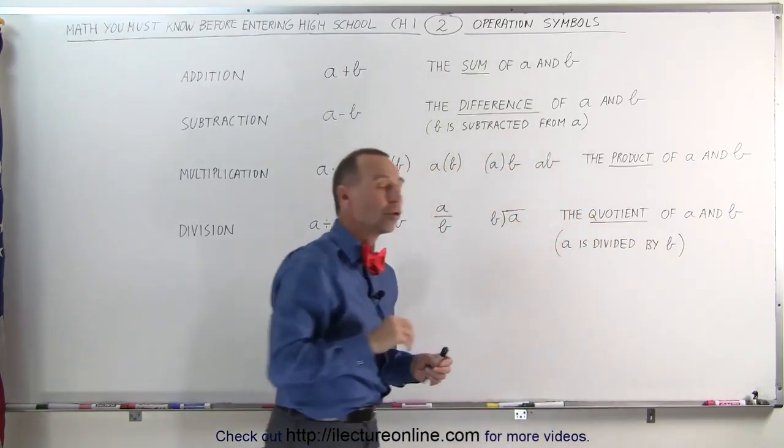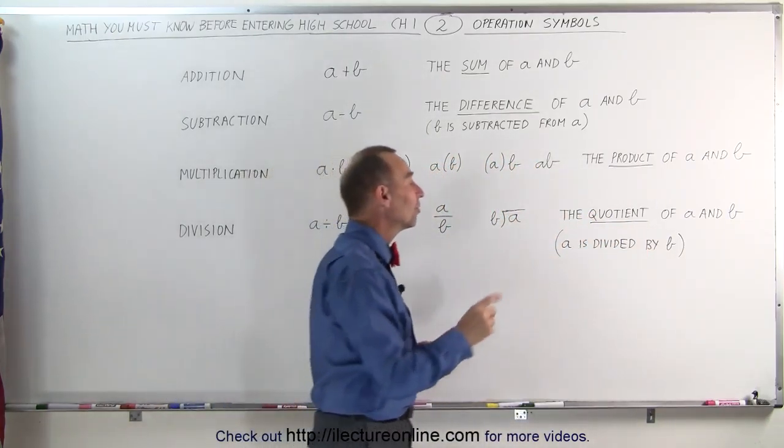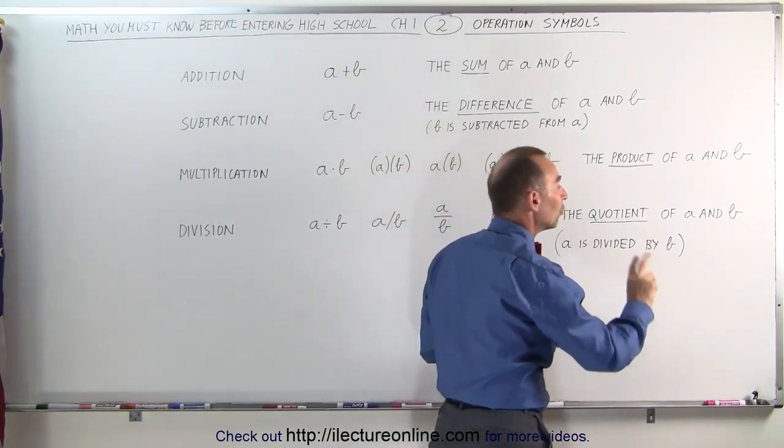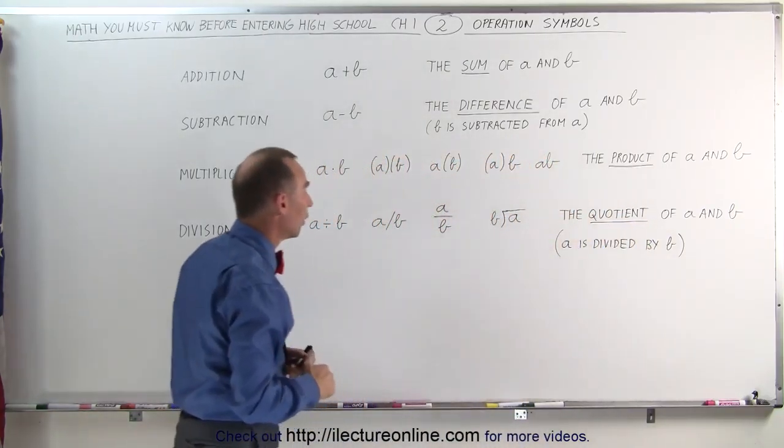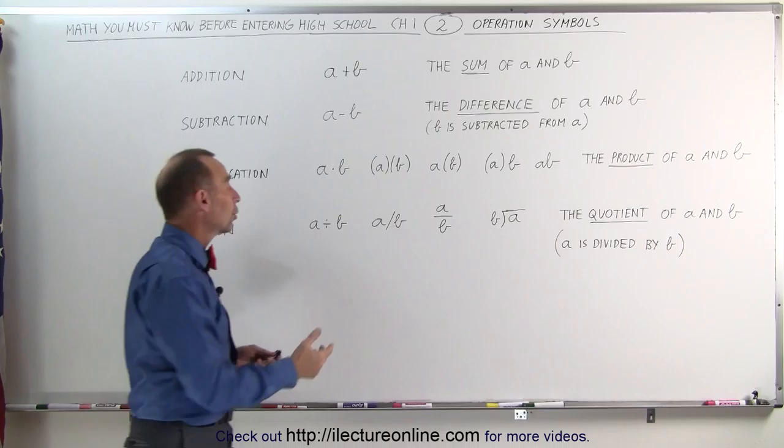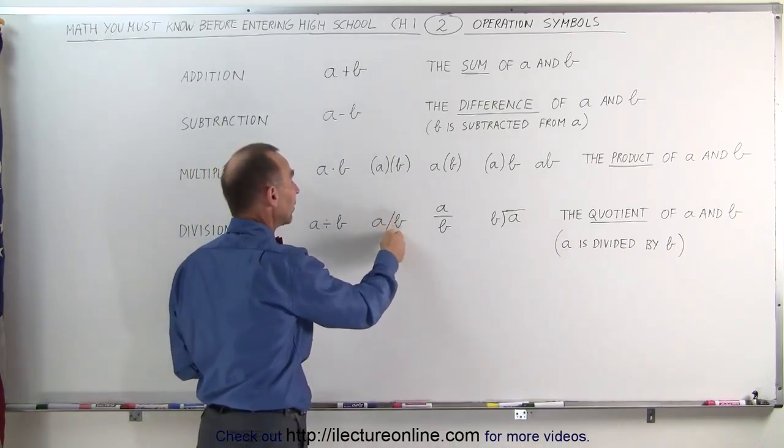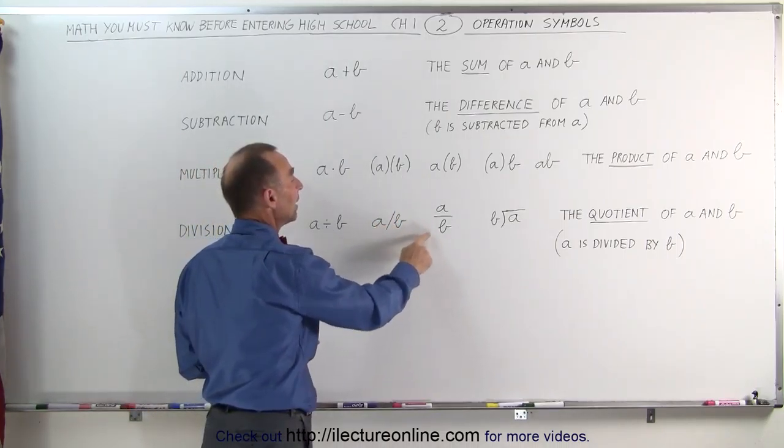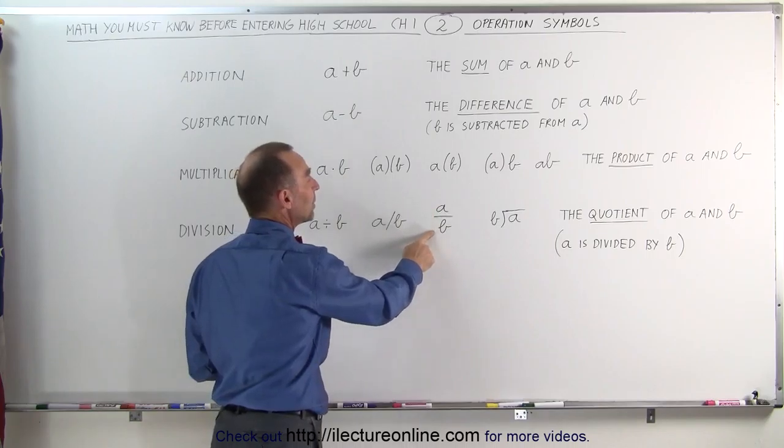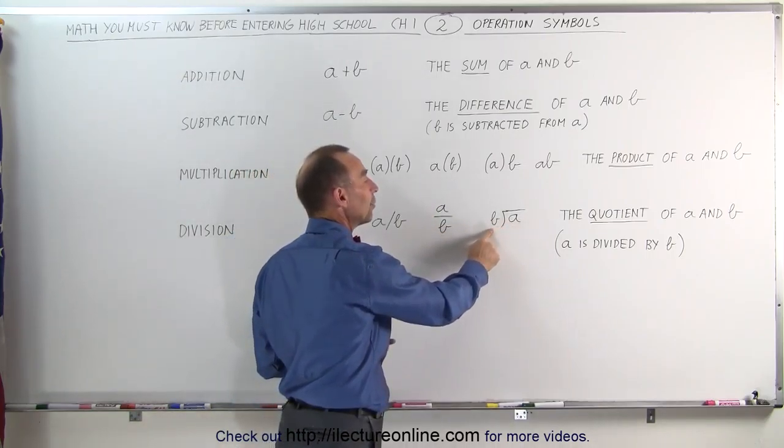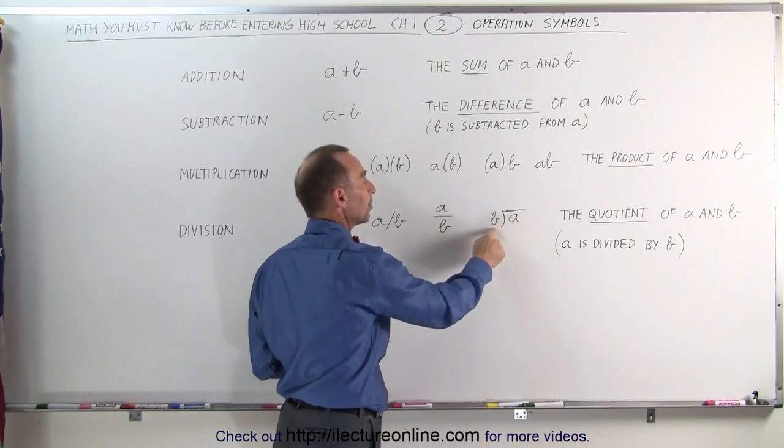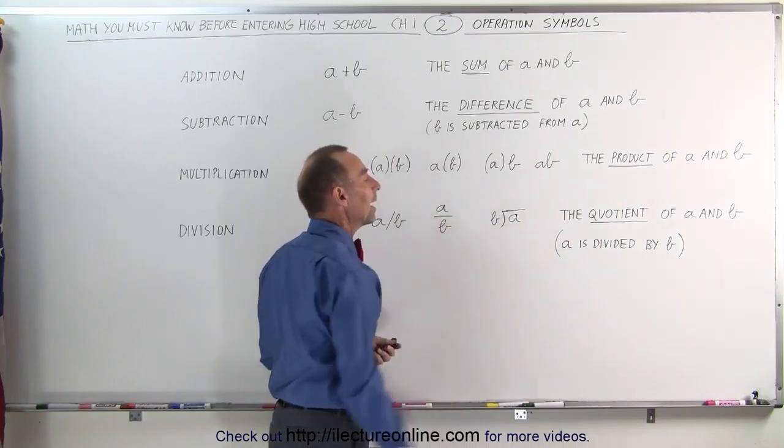But if you write the quotient of b and a, then it's b divided by a. So the order there is very important. Other ways of writing the quotient means a with a line like this. This means a divided by b. This also means a divided by b. And this also means a divided by b. If you want to reverse it, you put b there and you put a there, that means b divided by a.